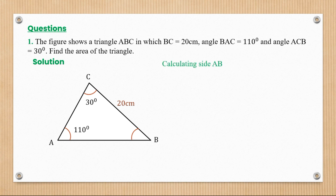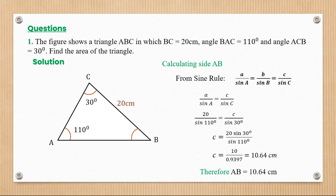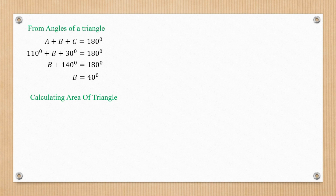To find side AB (the base), we apply the sine rule. The useful parts give us: 20 / sin(110°) = c / sin(30°), where small c represents side AB. Solving, small c equals 10.64 centimeters, so the base AB is 10.64 cm. Next, to find angle B: using the angle sum of a triangle, B + 140° = 180°, so angle B equals 40 degrees.